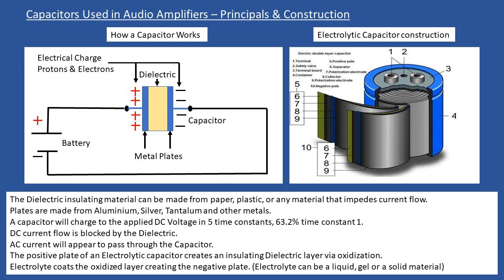Capacitors are used extensively in audio amplifiers for DC blocking. When AC current is applied, the behaviour changes — the dielectric now appears to allow AC current to pass directly through the capacitor, visible on an oscilloscope. This enables capacitors to be placed in different parts of the circuit, such as the tone control for bass or treble, combined with resistors to selectively pass or block certain frequencies. We also use capacitors to AC couple different stages of the amplifier while blocking DC.